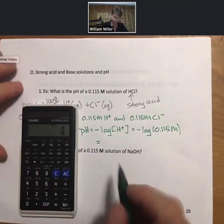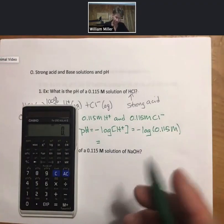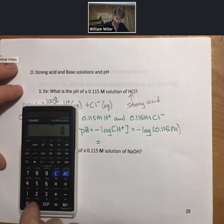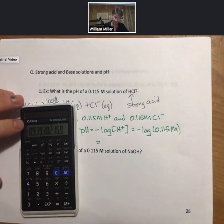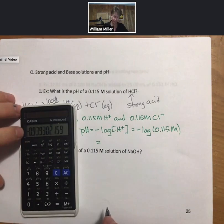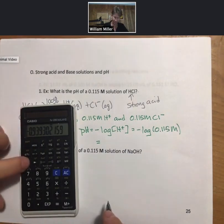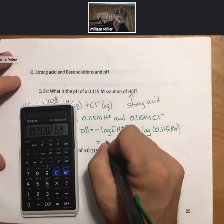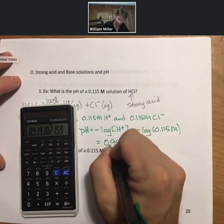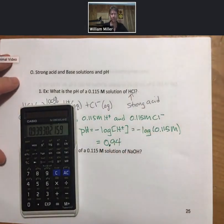I've got, from my calculator, I'm going to hit 0.115, and then I'm going to hit log. I get the negative, I get the log of it. I get minus 0.939. And then I have to take away the minus sign to get the actual pH. So, to two decimal places, 0.94 is our pH.